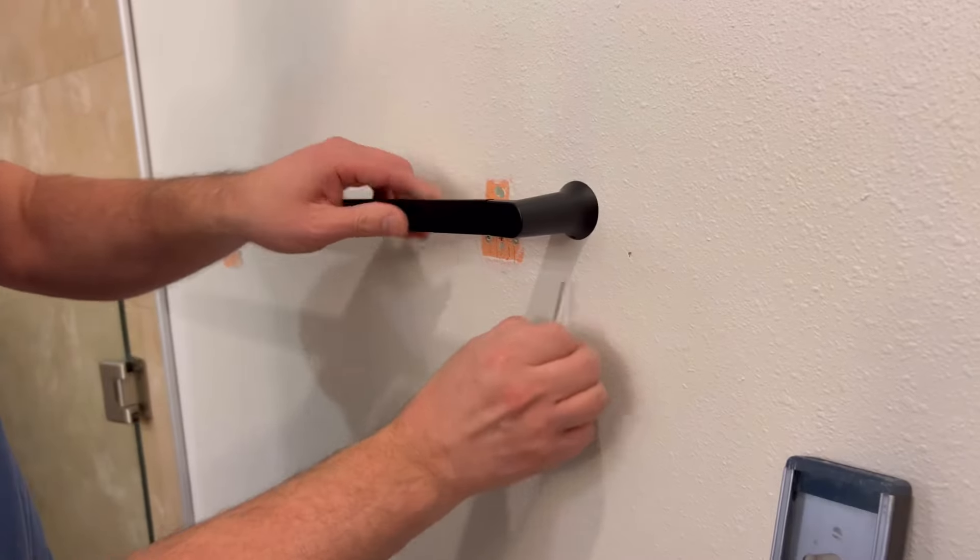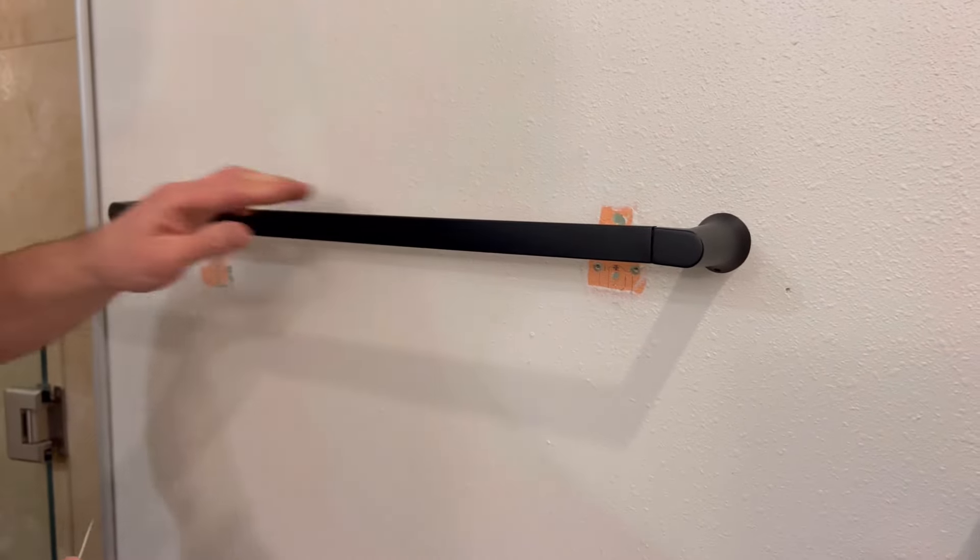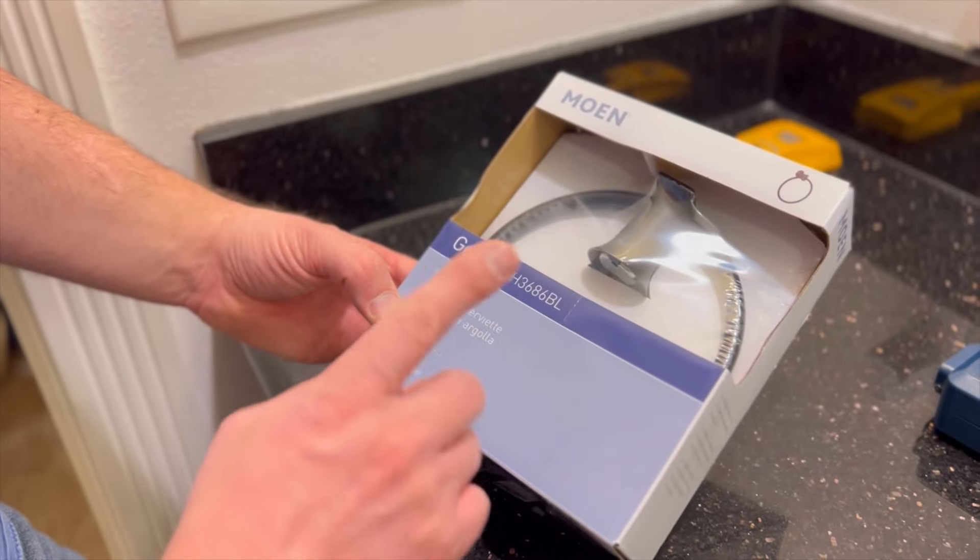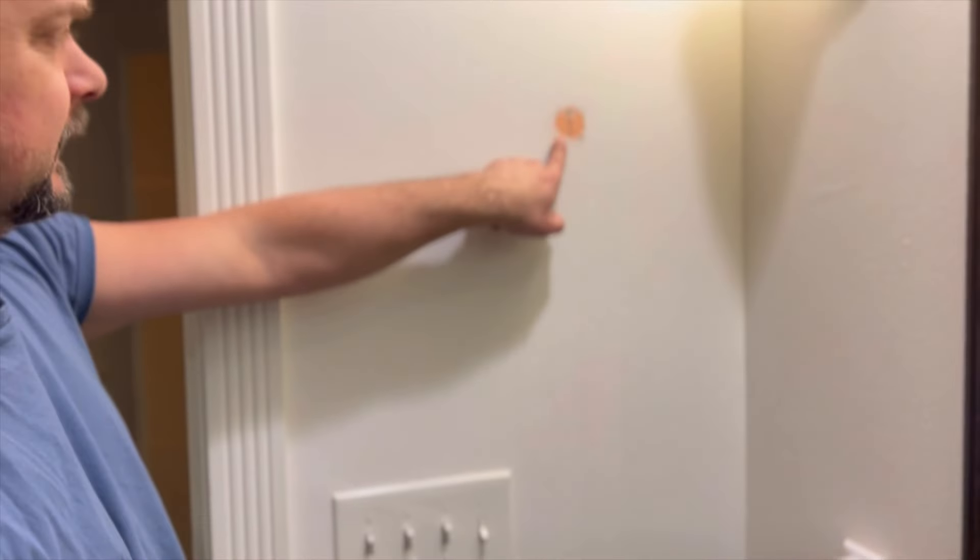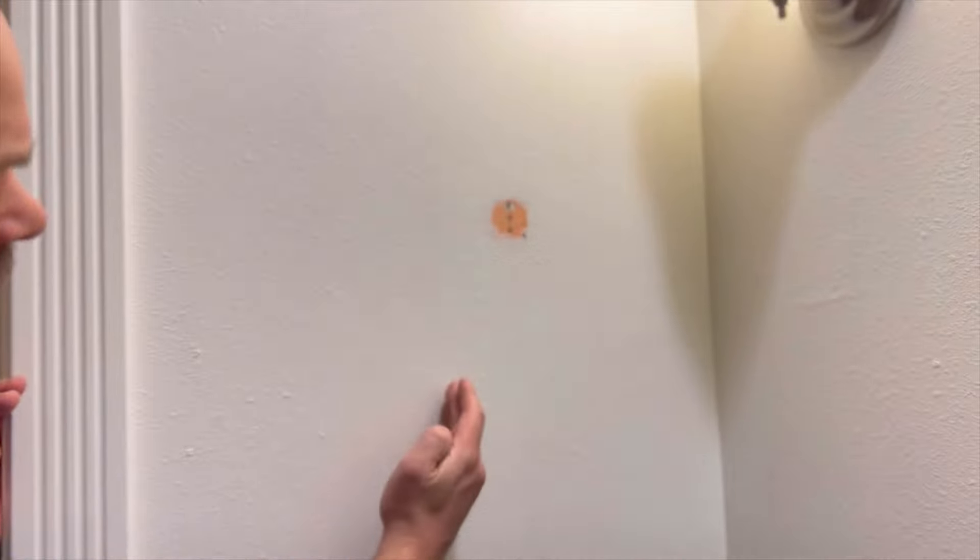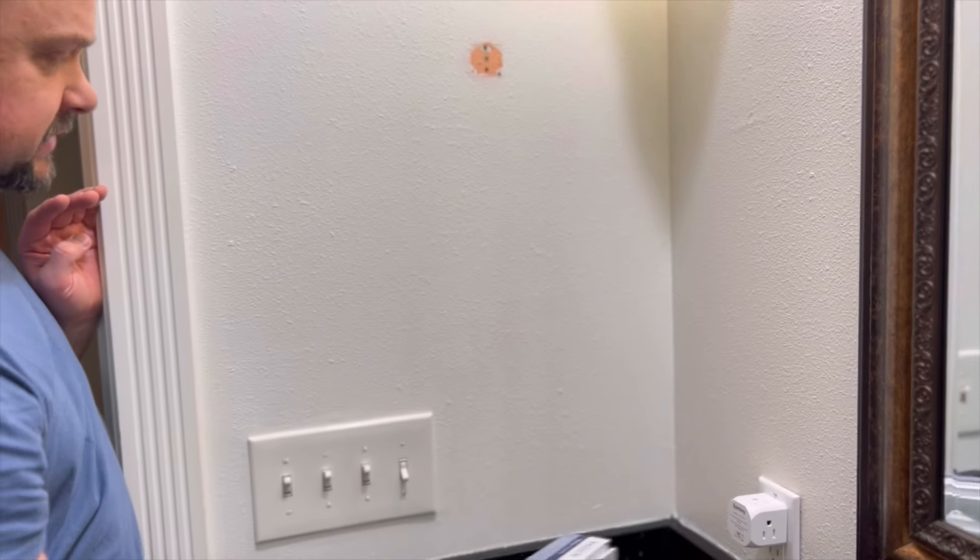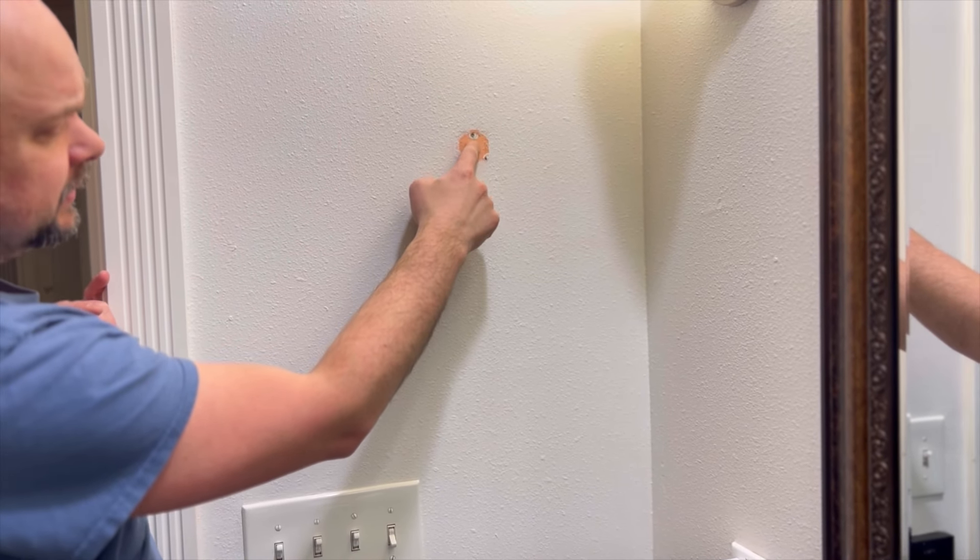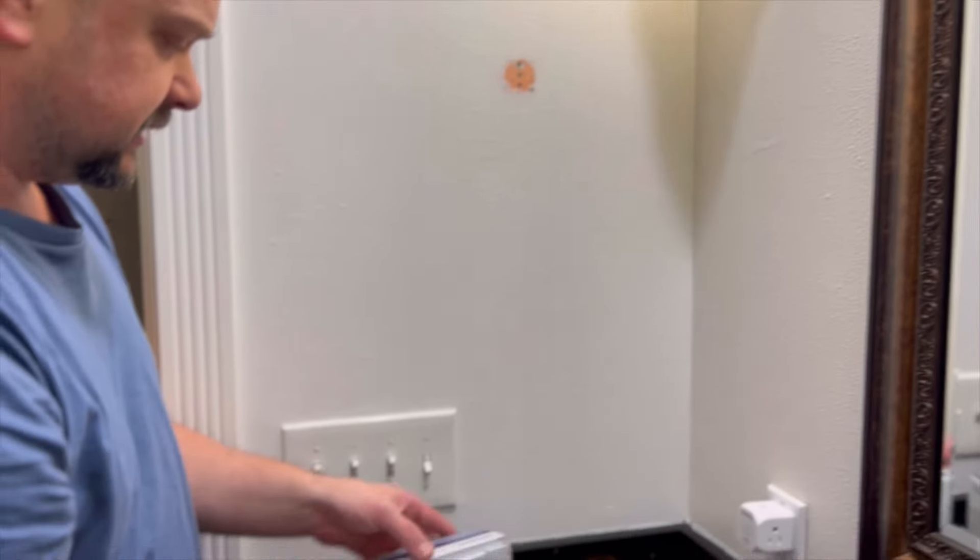This is the Moen Genta BH3682BL towel ring. We are going to be replacing our old one and I took out the old bracket. Currently our stud goes here but I'm not going to be mounting over the stud because we don't want the towel hanging over our light switches, so I'll be mounting it to the existing open area where there's no stud behind it.